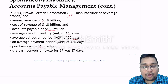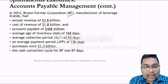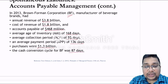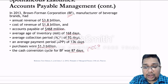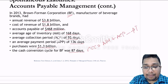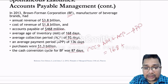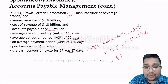The cash conversion cycle was 87 days. You can calculate it as: cash conversion cycle equals average age of inventory plus average collection period minus average payment period. So: 168 days plus 55 days minus 136 days equals 87 days.